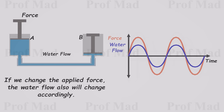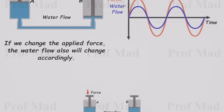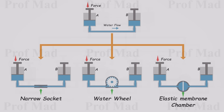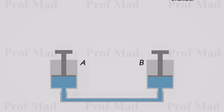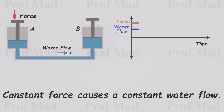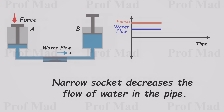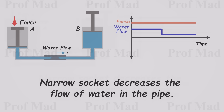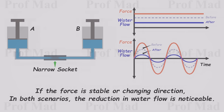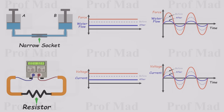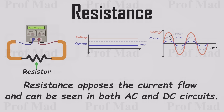Now let's examine the impact on water flow when different types of components are connected to the water path. We are applying a constant force to piston A, resulting in a steady water flow in the pipe. What happens if we connect a narrow nozzle to the water pipe? If the force remains the same as before, the narrow nozzle decreases the water flow in the pipe. Whether the force remains stable or changes direction, the reduction in water flow is noticeable in both scenarios. The same principle applies to an electrical circuit when we connect a resistor — the resistor diminishes the current flow through it. As we mentioned at the beginning of this video, resistance opposes the flow of current and is present in both AC and DC circuits.